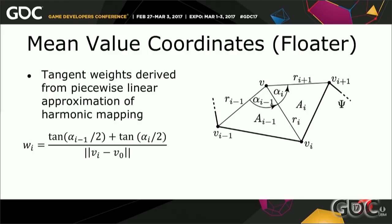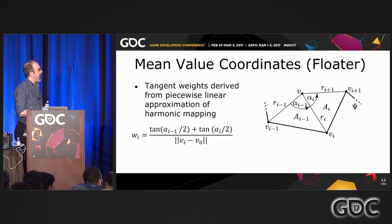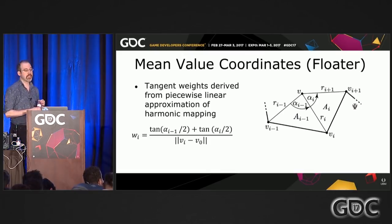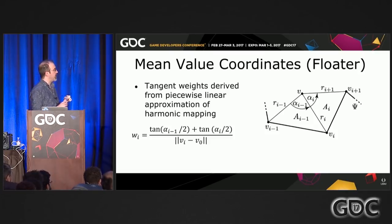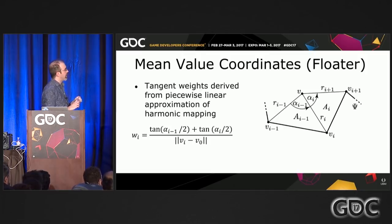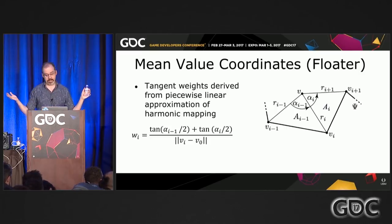The first stab might be to use the cotangent weights from harmonic functions, but it turns out those violate convexity. The weights you want to use were invented by Michael Floater and are called mean value coordinate weights. What he did is take the harmonic map we looked at previously, derive a piecewise linear approximation, and do a whole bunch of trig. You end up with weights in terms of the tangents of the angles around a given vertex. The weight of a vertex in this formula depends only on three vertices — itself and its neighbors.